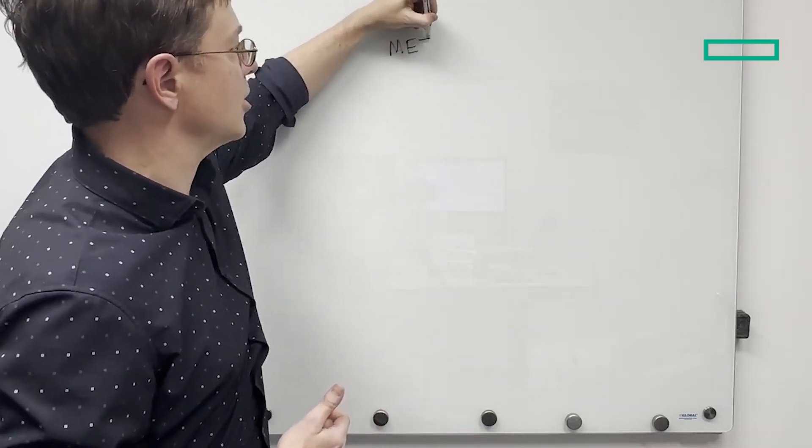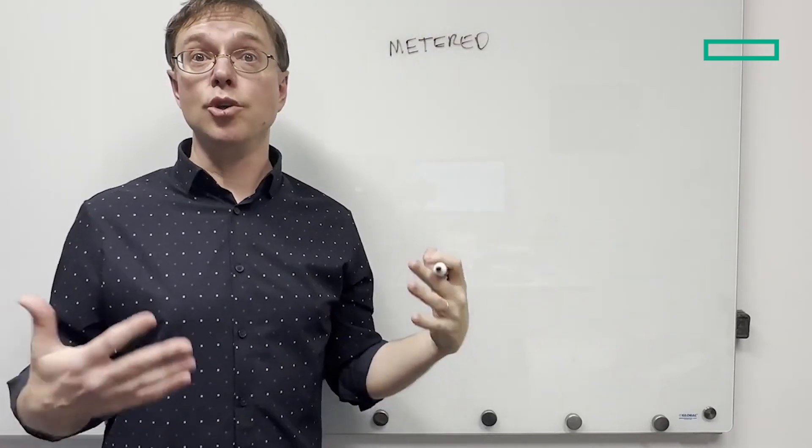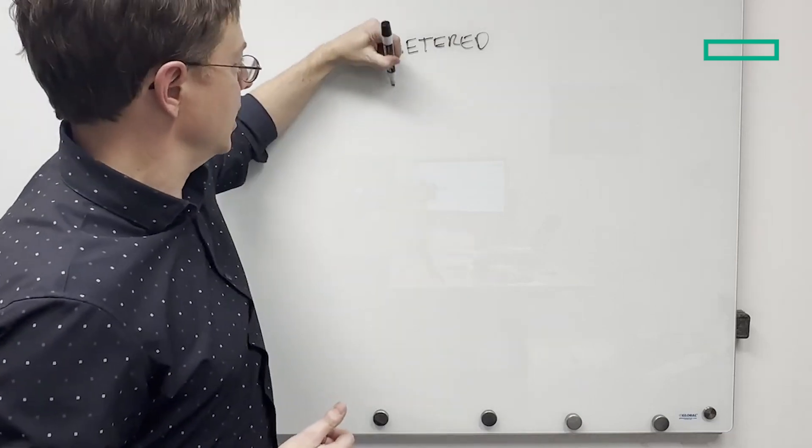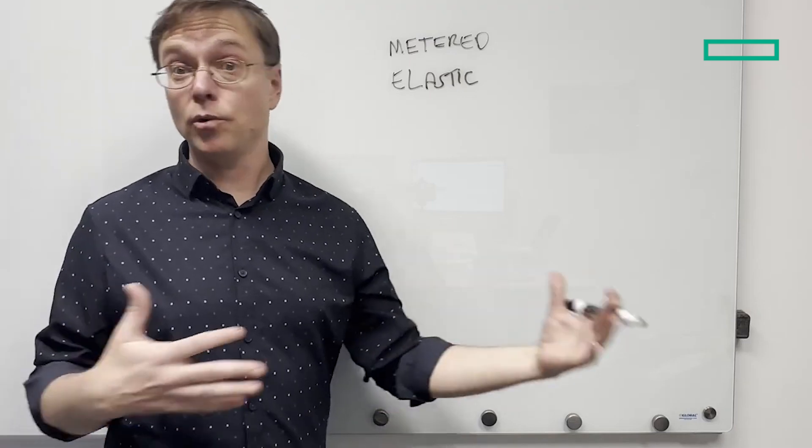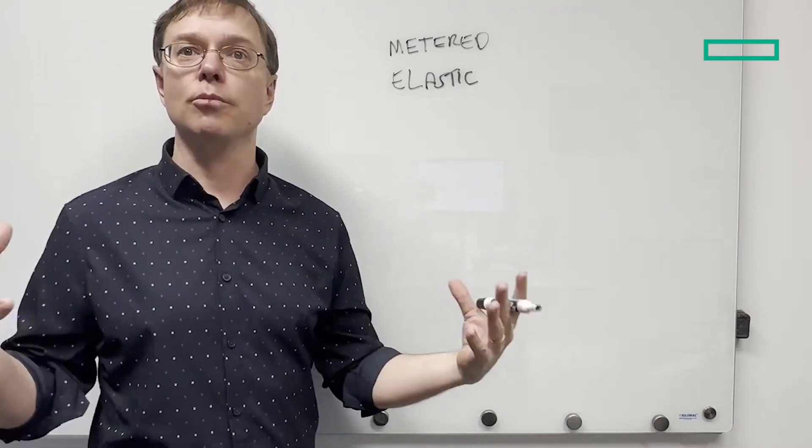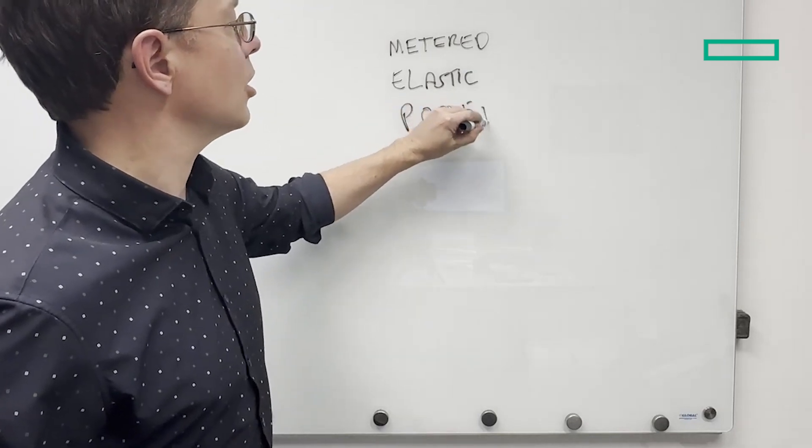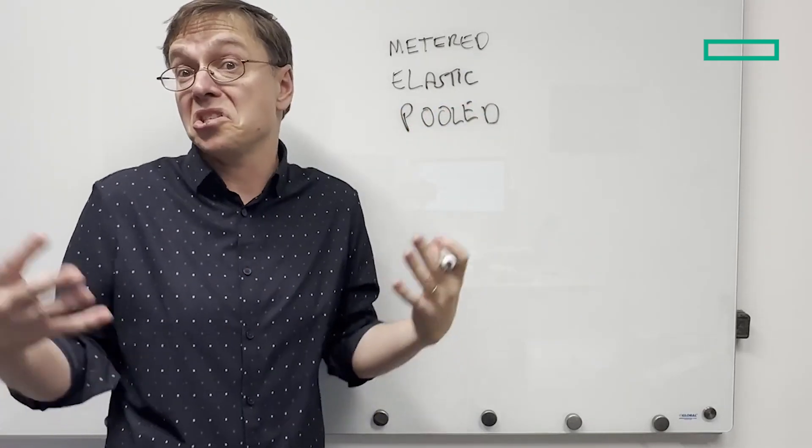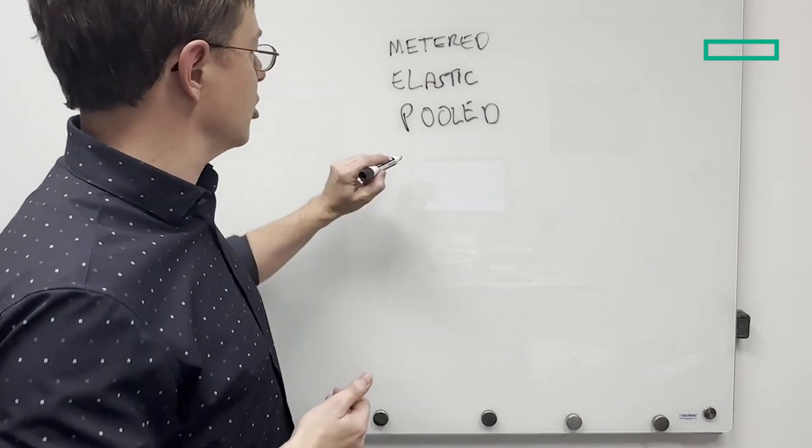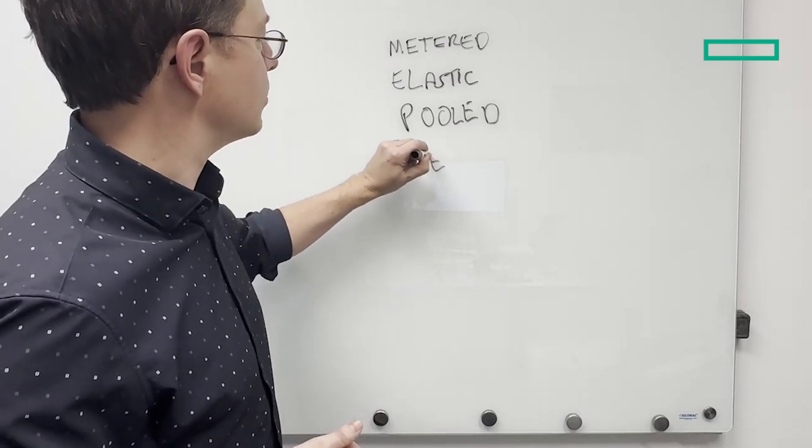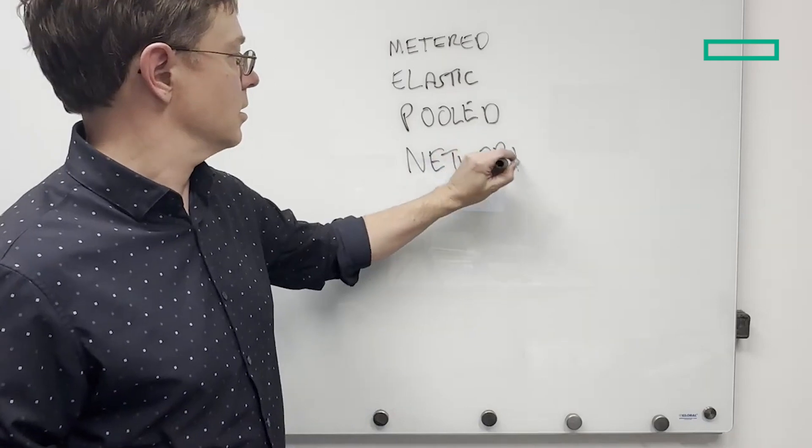So metered is one of the key attributes of cloud computing, right? You only pay for what you use. Another thing is it's elastic, right? Meaning you don't care if you're running out of space or not. It'll grow and shrink. It's fungible. It's pooled, right? Meaning your resources are often co-located alongside other resources. You don't really care where your application is getting provisioned. You're also accessing it over a network, right? You're going into a web browser, accessing your resource.